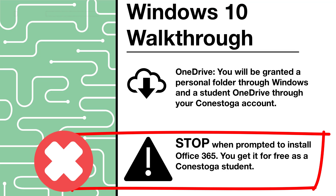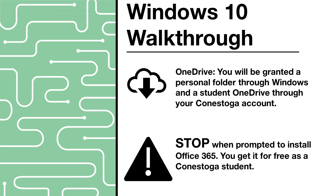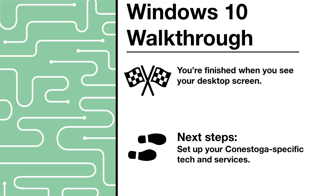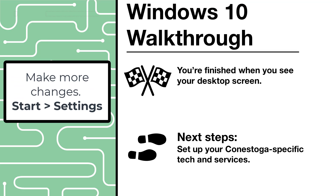At the Office 365 screen — make the most of your 365 with a free Microsoft trial — please stop. If you do not have Microsoft Office 365, you can get it for free as a student at Conestoga College. If this applies to you, select No Thanks at this screen. I will talk more about how to access that Office 365 offering a little later. You will finish by landing on a clean desktop. You can make further adjustments to these settings and others by opening the Start Menu, then selecting Settings.